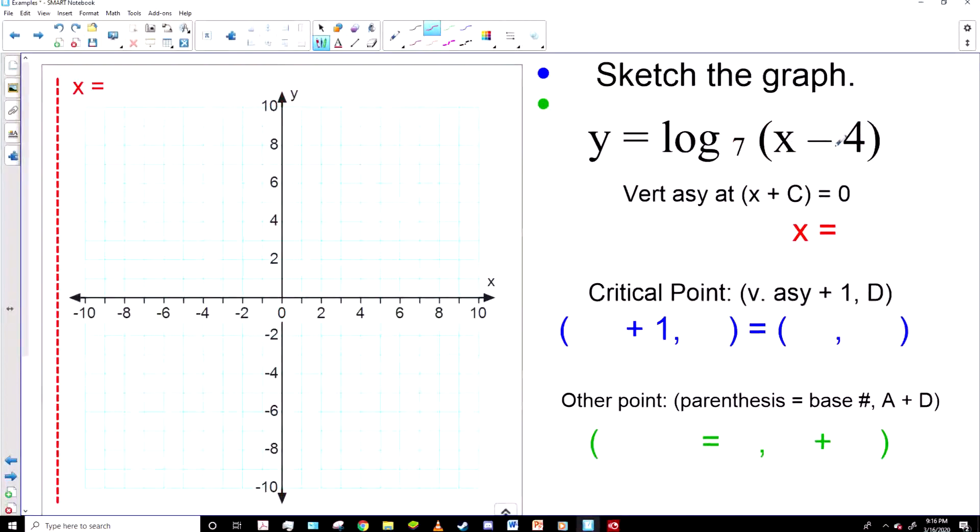Let's do a little more complicated one. Now see how this one has the X minus four in the parentheses. That means the four is the C term. So we set that parentheses X minus four equal to zero, and of course, X will equal four. And that's our new vertical asymptote. So we move the graph to four, the dotted line to four.